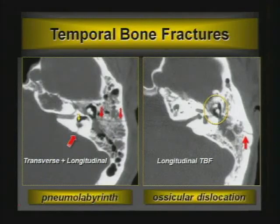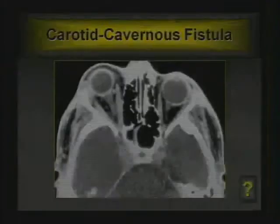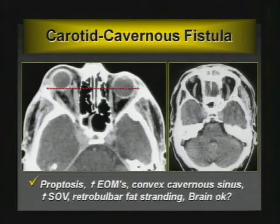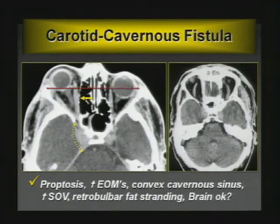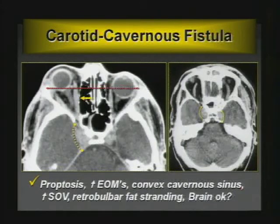Case 10: a patient with proptosis — a carotid-cavernous (CC) fistula. Findings include proptosis, enlarged and engorged extraocular muscles, a convex ipsilateral cavernous sinus, enlargement of the superior ophthalmic vein, and retrobulbar fat stranding. The brain can develop hemorrhagic venous infarcts with a CC fistula depending on outflow. A traumatic CC fistula is a high-flow direct shunt — a hole in the internal carotid artery causing arterialized blood to flow into the cavernous sinus and out through venous drainage routes.